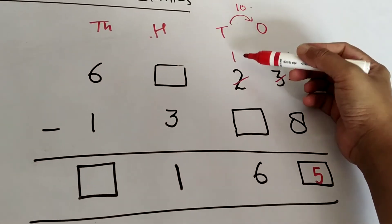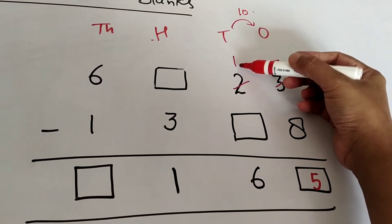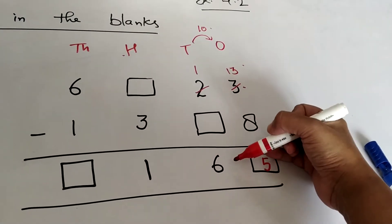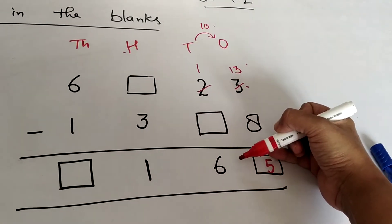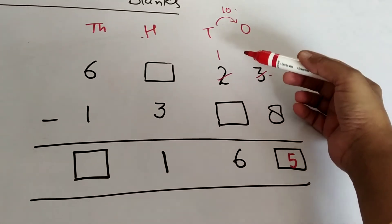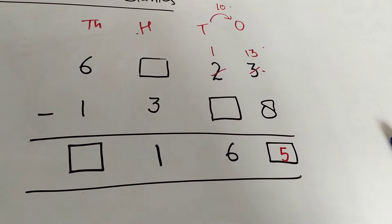Now what is left is 1. From 1 what should we subtract to get 6? Can we think of a number which we can subtract from 1 to make 6? No.